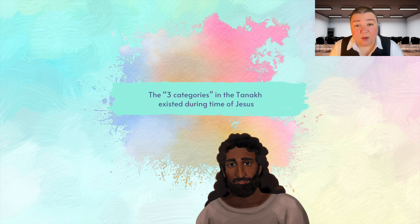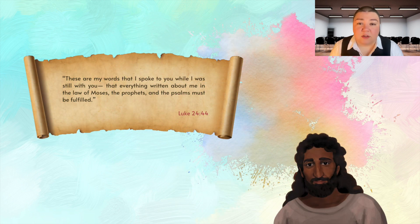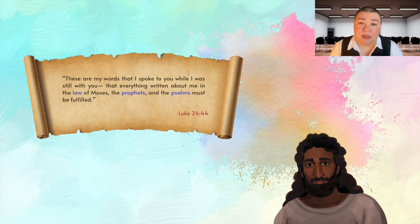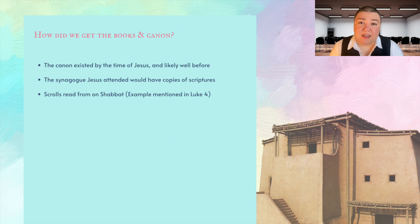The existence of the Tanakh, with its three categories, is referred to by Jesus himself in Luke 24:44, when he said, 'These are my words that I spoke to you while I was still with you, that everything written about me in the Law of Moses, the Prophets, and the Psalms must be fulfilled.' Psalms falls into the third category of Ketuvim, or other writings. So the canon existed by the time of Jesus, and likely well before. The synagogue Jesus attended as a child and adult would have had copies of the scrolls of scriptures, read from each Shabbat.